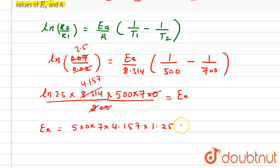And that finally will multiply by 4.157. So after multiplying, the final answer is coming out to be 18,186.8. It will be in joules, or if you want to convert into kilojoules then it will be 18.186 kilojoules per mole.